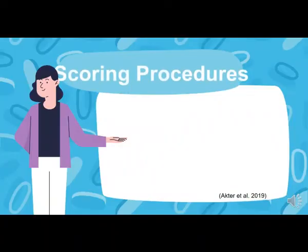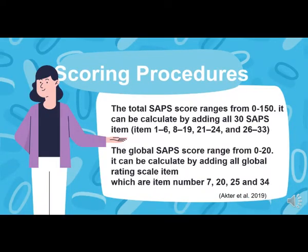Regarding the scoring procedure, the total SAPS score ranges from 0 to 150, and can be calculated by adding all 30 SAPS items. The global SAPS score ranges from 0 to 20, and can be calculated by adding all global rating scale items, which are item numbers 7, 20, 25, and 34.